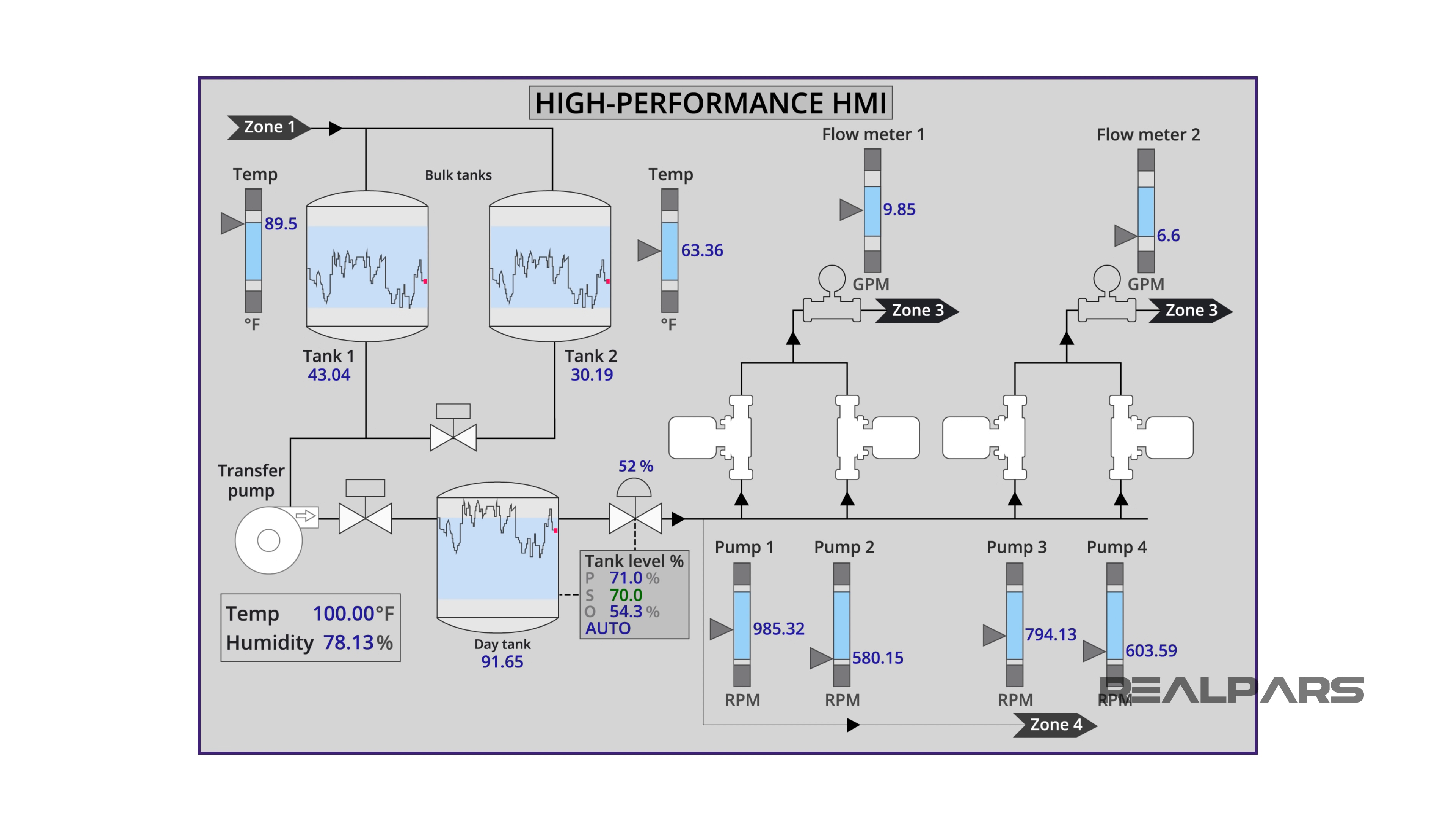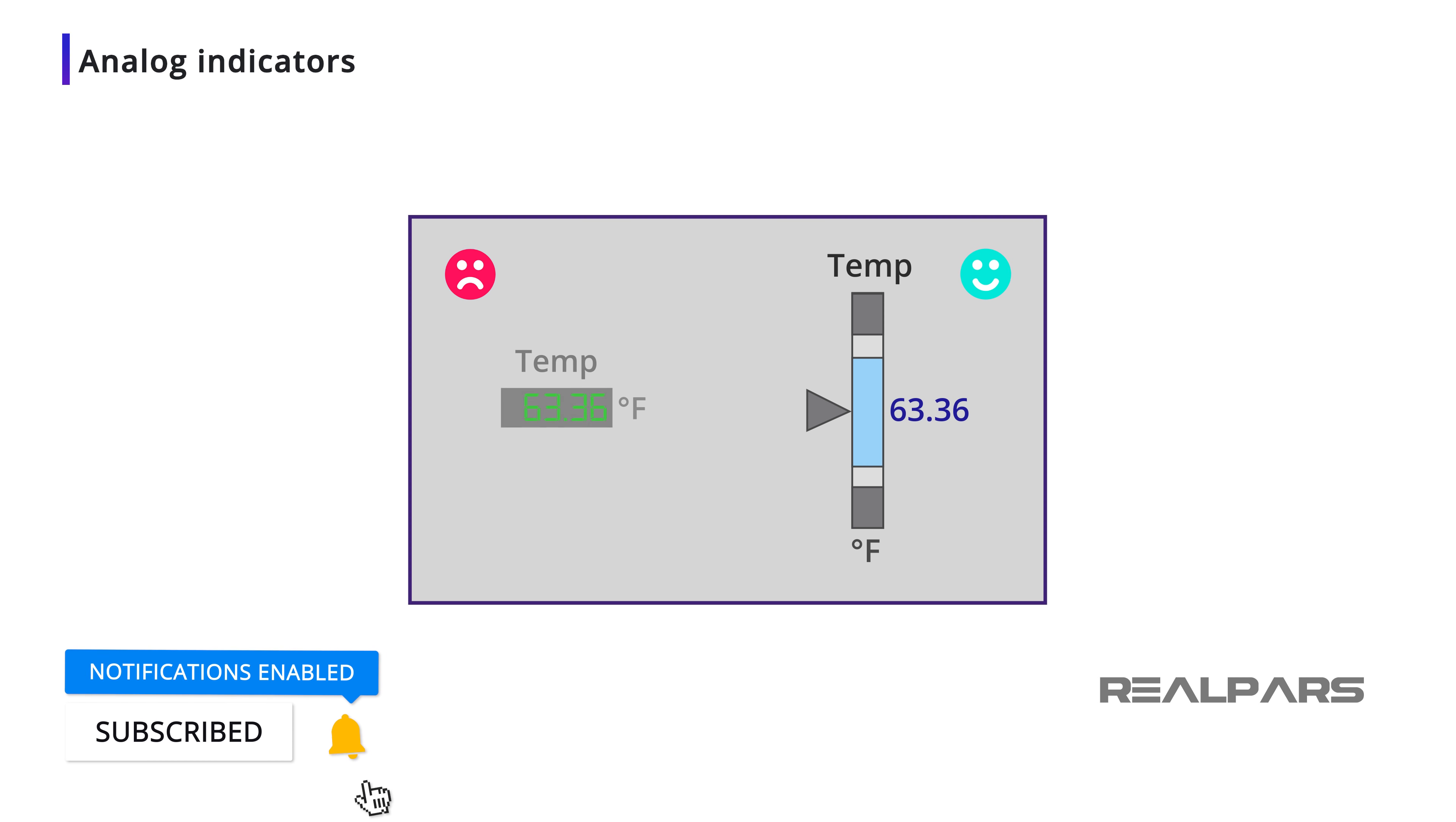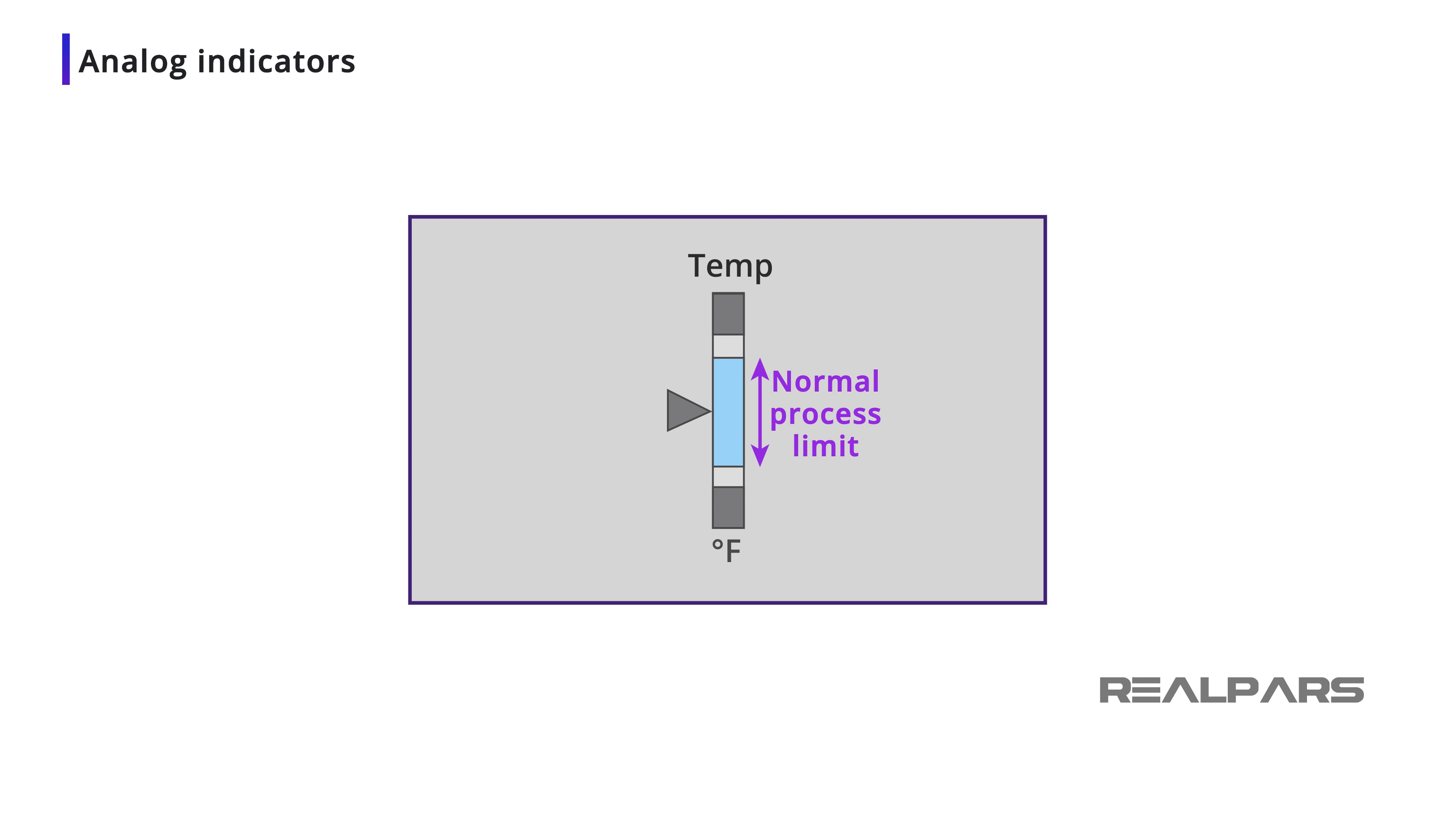When developing a High-Performance HMI, one of the main principles is the use of moving analog indicators with a moving pointer instead of only a numerical display. The analog indicators display the span of the instrument being displayed, and in that range will be an indicator of the normal process limits. Above and below the indicator will be white bands indicating abnormally high and low process values respectively. Above and below the white bands are dark-gray bands which indicate high-high and low-low process values. At a quick glance of a second or two the operator will see the pointer position and will be able to determine the operating status of the process, and be able to move on to the next process.